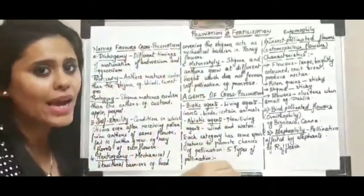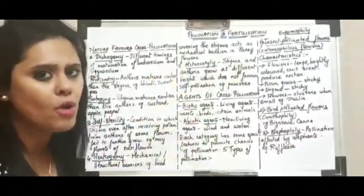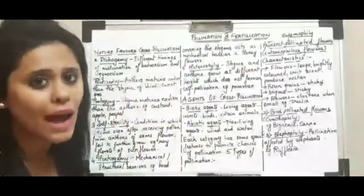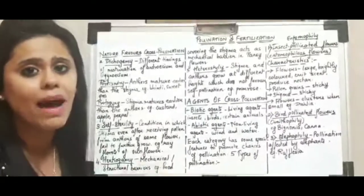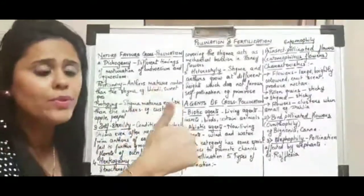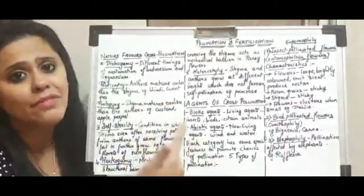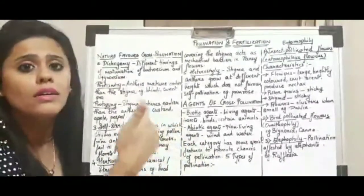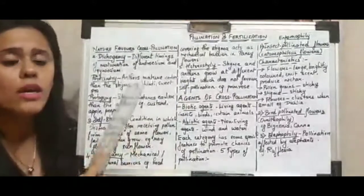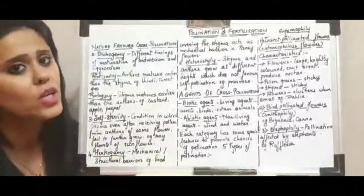The anthers burst and release pollen, but the timing of pollen release and pollen dropping on the stigma must align — the stigma should be mature enough to receive the pollen. When the timings match, only then self-pollination happens. Self-pollination occurs when flowers are bisexual and both male and female parts mature at the same time. Dichogamy means both reproductive parts mature at different times, which favors only cross-pollination.